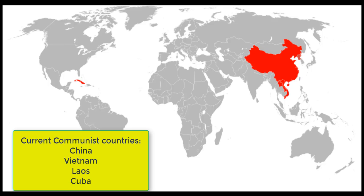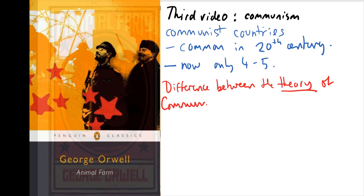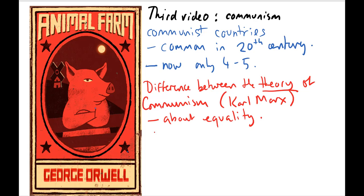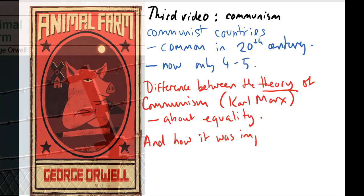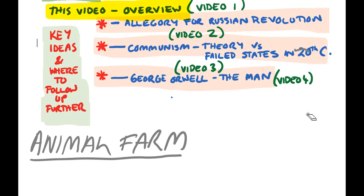What I really want people to understand is that there's a big difference between communism the theory, as outlined by Karl Marx, and what many revolutionaries around the world hoped to see. It's designed to be a system of equality where ordinary people take control of societies and run them in the interests of all. However, the way it's been implemented around the world does not follow that outline, so there's a big difference between communist countries and governments and the theory of communism.